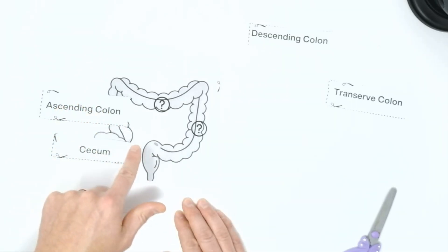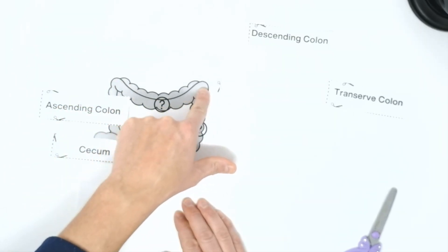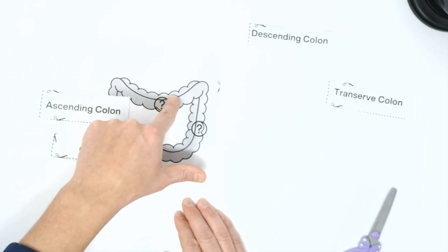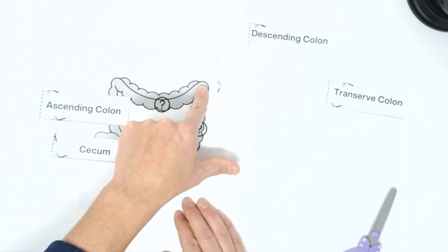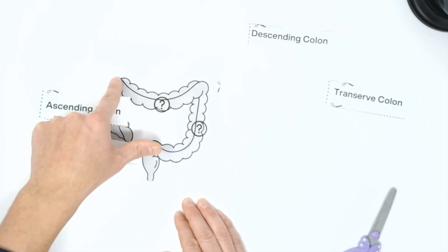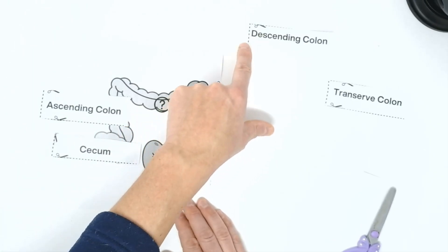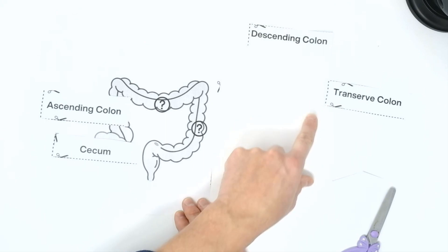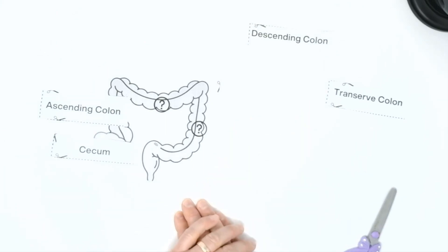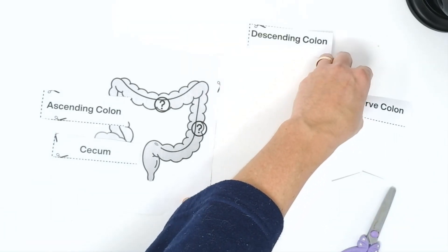Now that we've gone up, we have to go across, like a bridge. We have to go across this intestines right here. Is this portion of the large intestine going to be the descending colon or the transverse colon? What do you think? If you picked transverse colon, you're right.